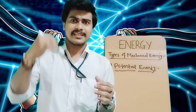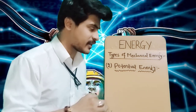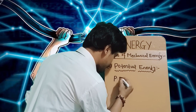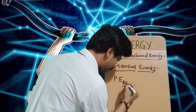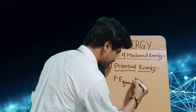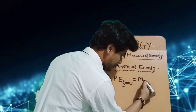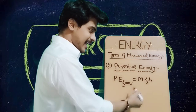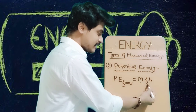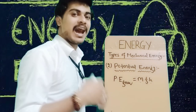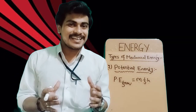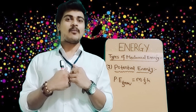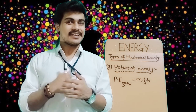The gravitational potential energy is expressed as P.E. = mgh, where m is the mass of the object, g is the gravitational acceleration, and h is the height of the object.